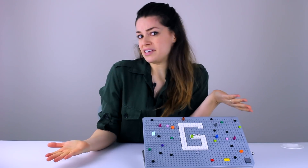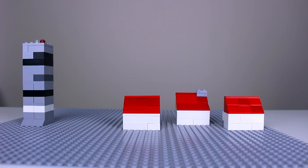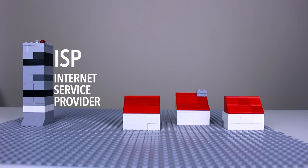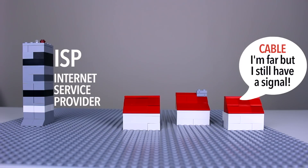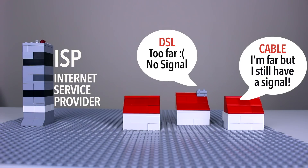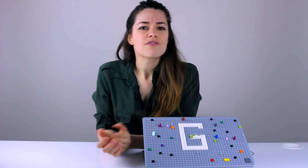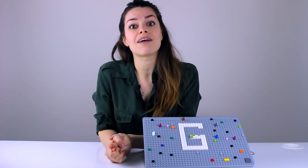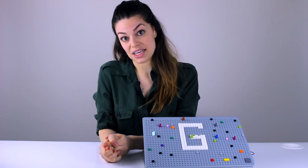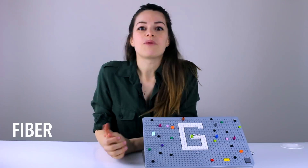So why not just use DSL all the time? Well, cable internet is not impacted by how far away you are from an internet service provider, but DSL IS impacted by how far away you are from an internet service provider. Not to mention that cable generally has higher bandwidth, given that it needs this to send moving images that television requires. For the most part, cable will have larger megabits per second speeds than DSL.